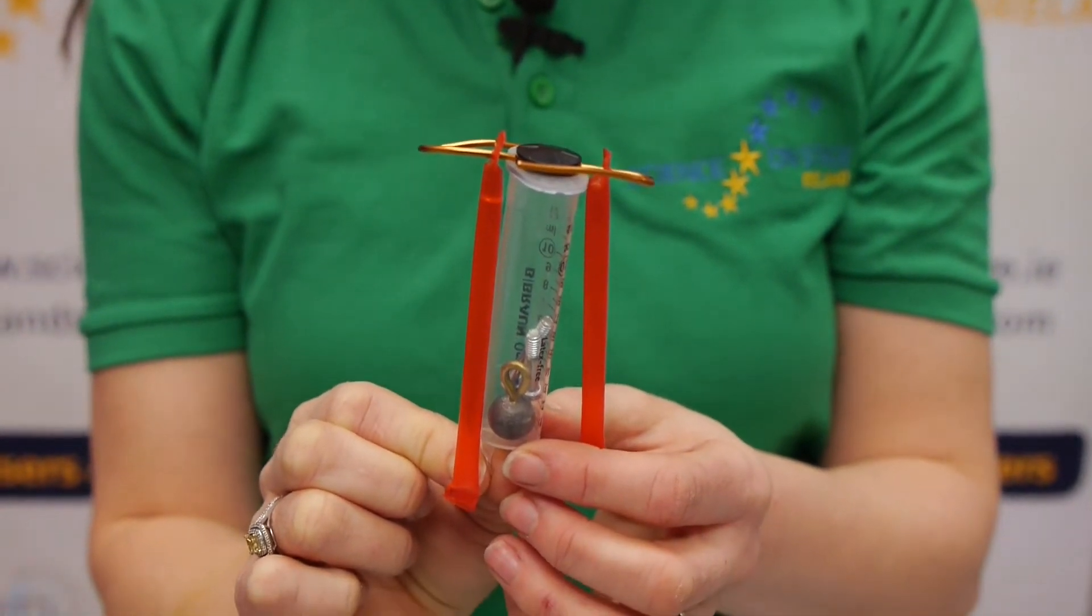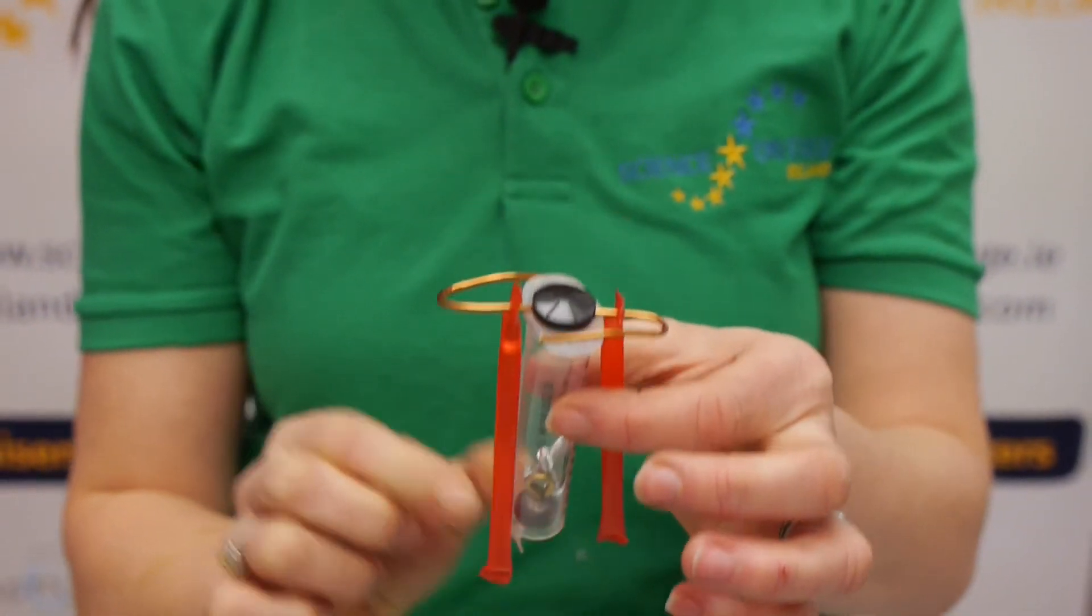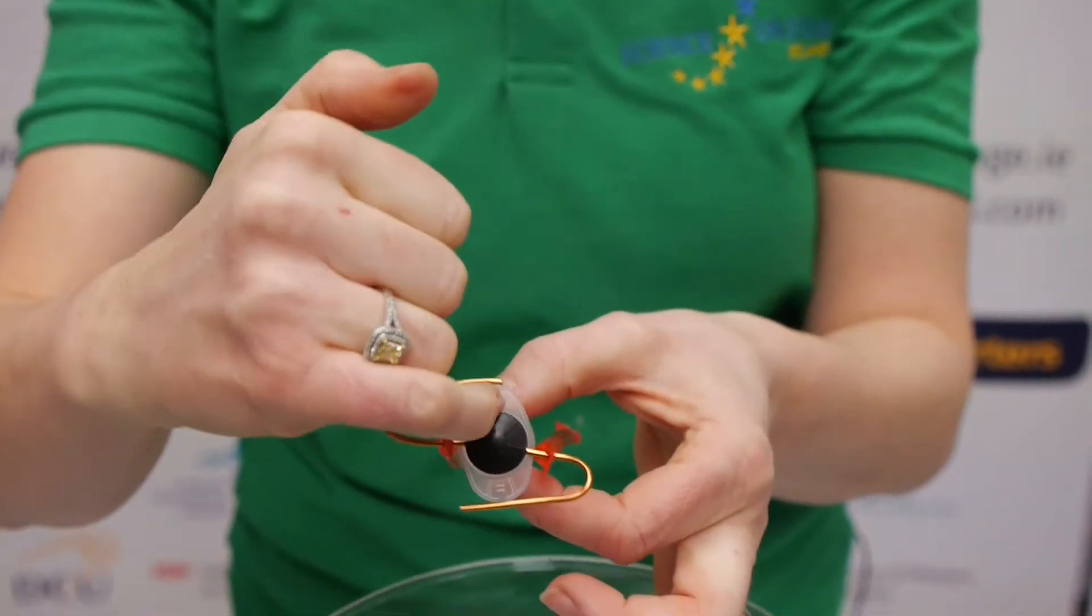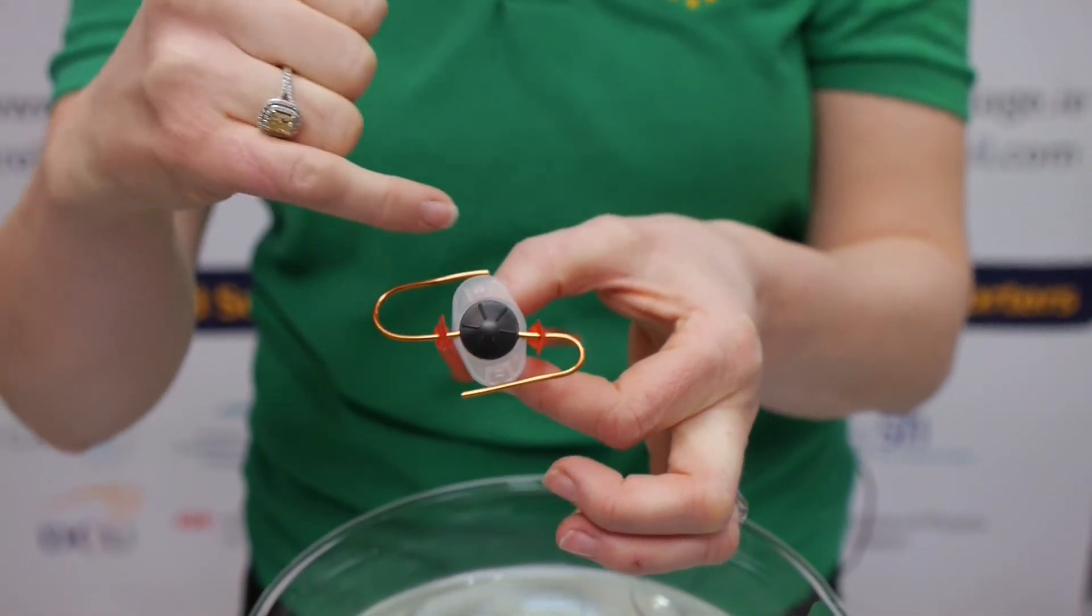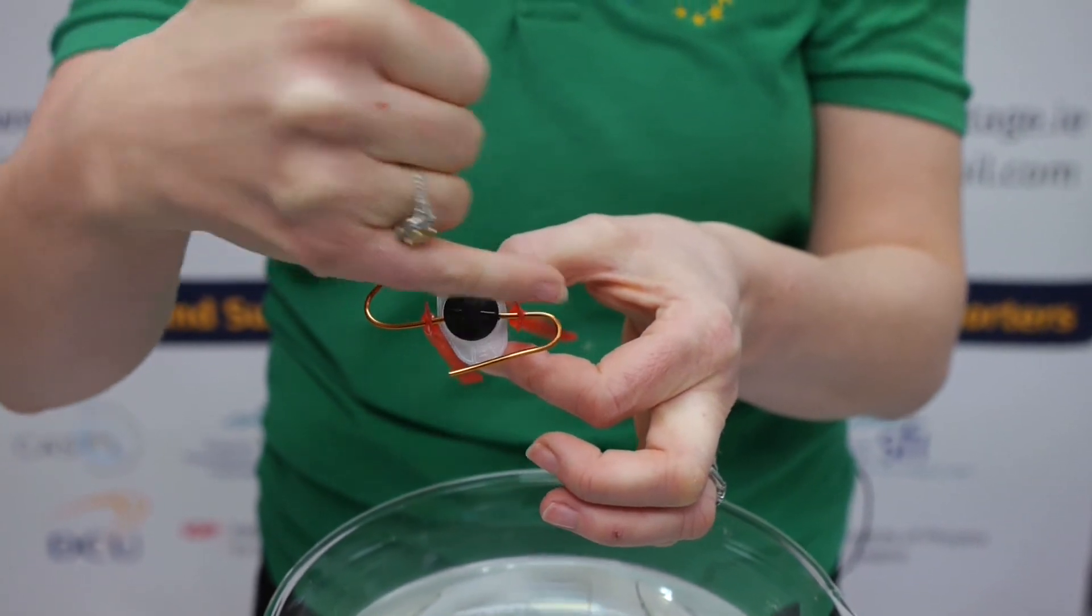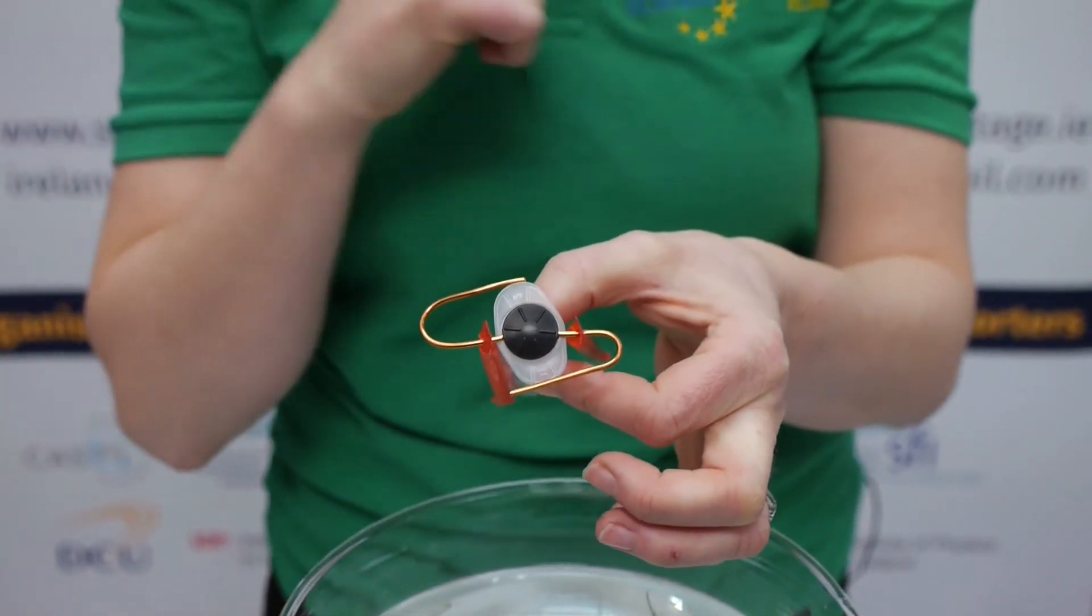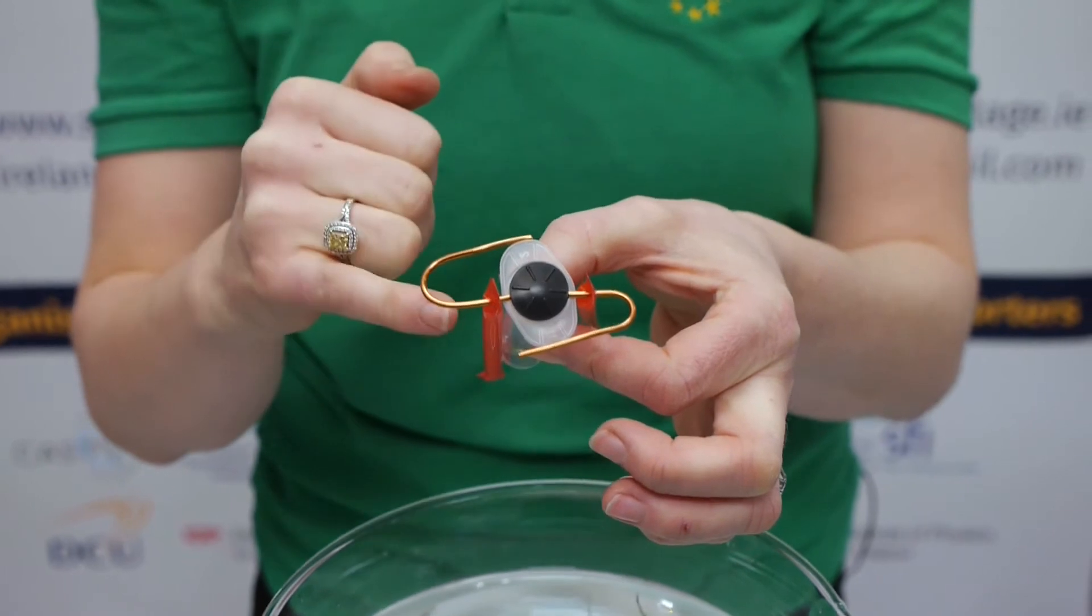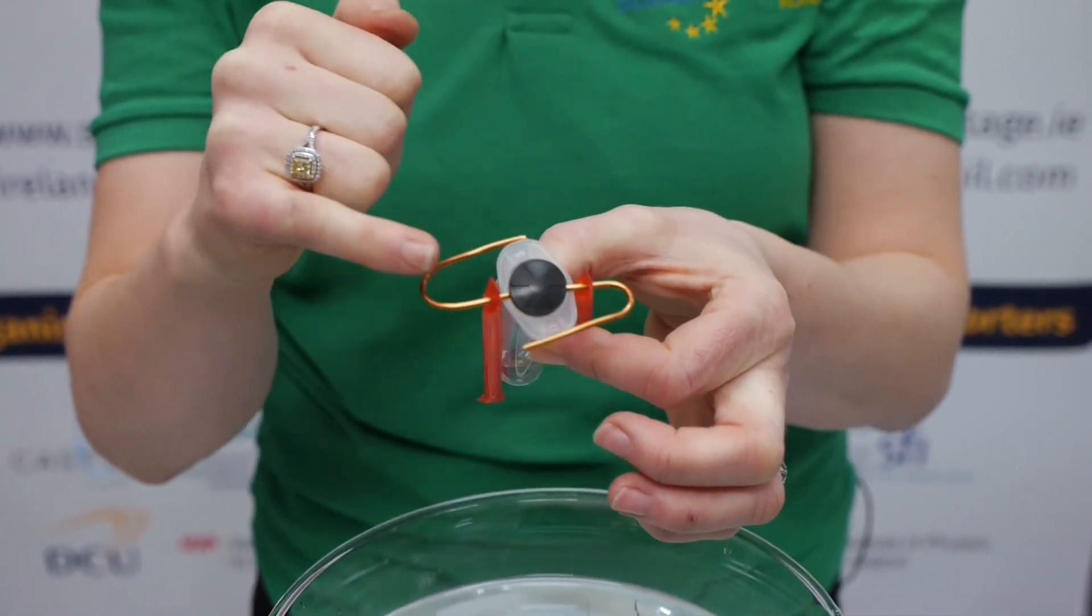Here we have a syringe. I've taken the plunger out and removed the plastic off the top. We've taken copper wire and pierced through the hole of the top, making it into this nice S shape, and I've placed two straws on each side.